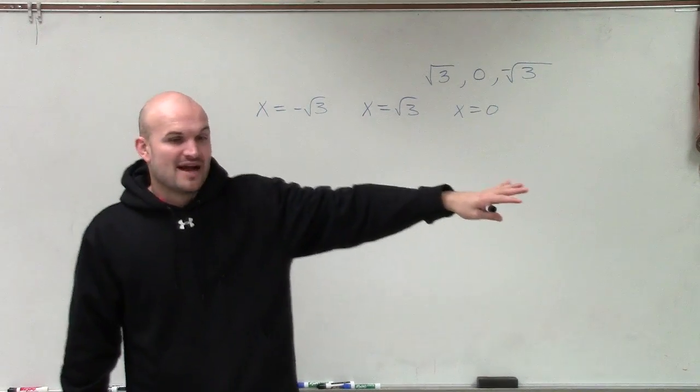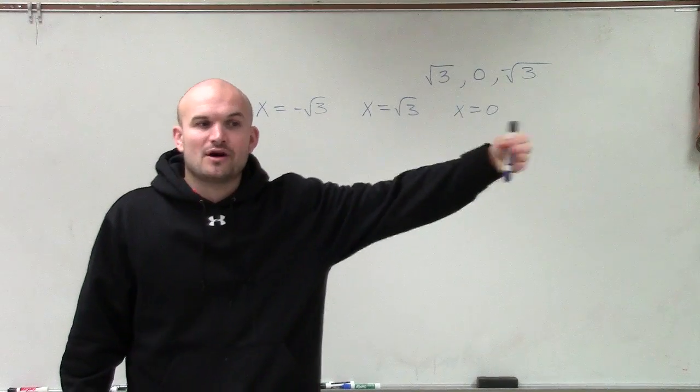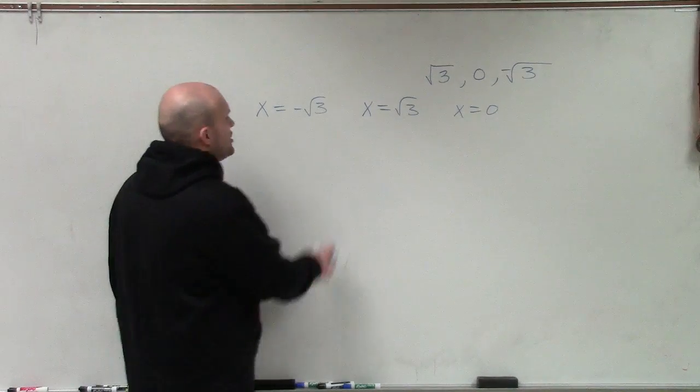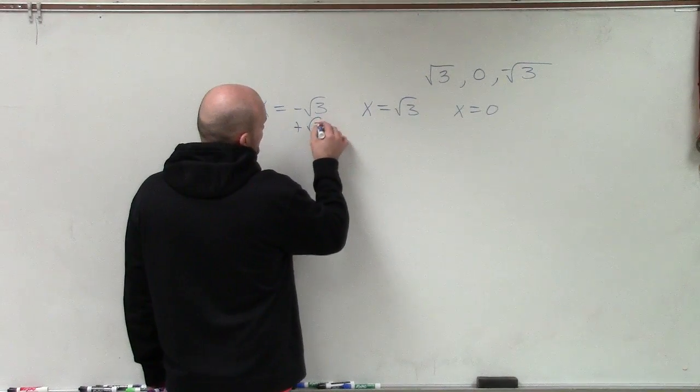And remember, to write them as factors, we need to say, well, where did they come? They came from our factors. And the reason they came from our factors is because we had our factor set equal to 0. So I'm going to need to now set these equal to 0.